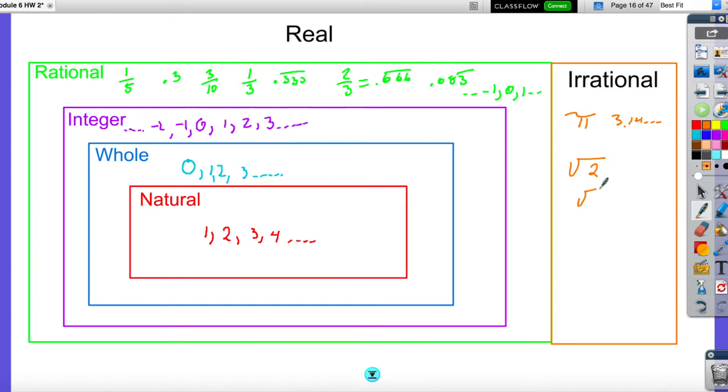Also, the square root of a non-perfect square, such as the square root of 2, square root of 3, and so forth. And in the future, you're going to learn about the letter E and what number that is.